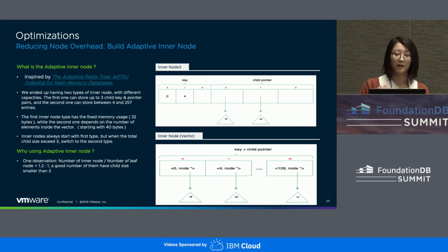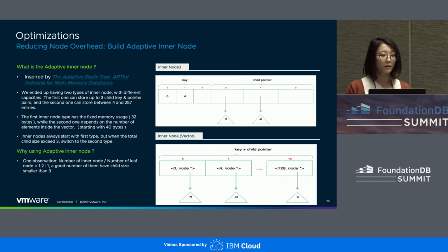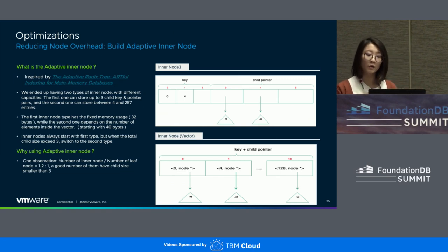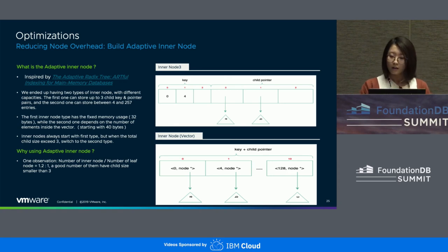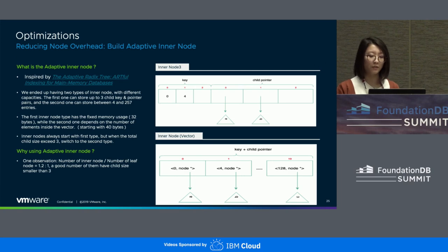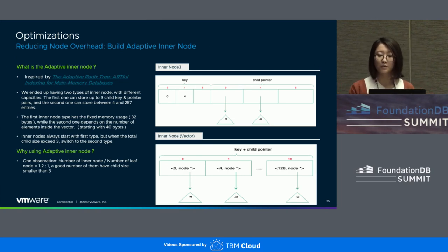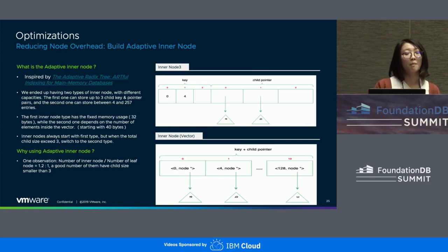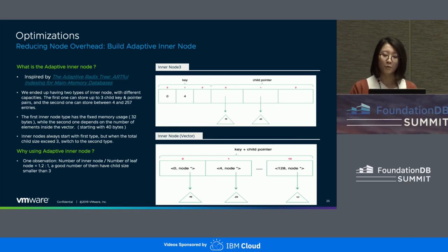Theoretically, vector can hold as many elements as possible. The motivation behind this is based on the observation that the number of inner nodes is 1.2 times that of leaf nodes, so there's a good chance most of them have a children size smaller than three. The choice of three is a balance between node overhead and node children capacity.